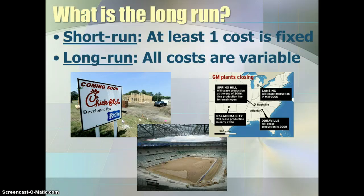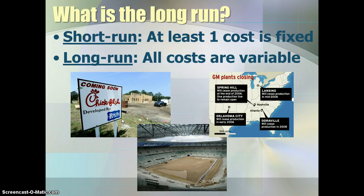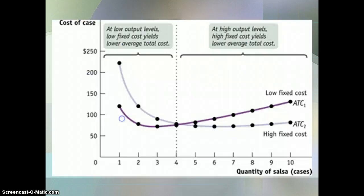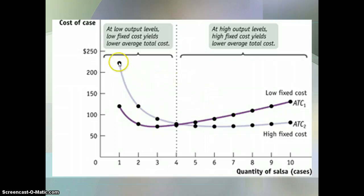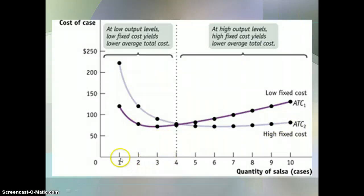Because inputs are variable in the long run and we can have any combination of inputs that we want, we can look at different cost curves to determine the best mix of inputs to reduce our average total cost given the amount of goods we want to produce. For example, we might have a choice between one machine or two machines. If our production is less than four cases of salsa, it makes sense to have only one machine because average total costs are lower in that range. But if we're going to make more than four cases, we'd want two machines because the average total cost for two machines becomes lower.